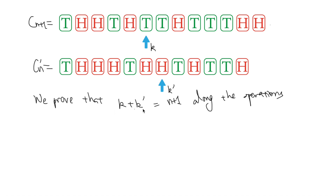As you may notice in the animation, the indicator arrow in the first game is synchronized with the arrow in the second game. Indeed, their positions k and k' always sum up to n plus 1.